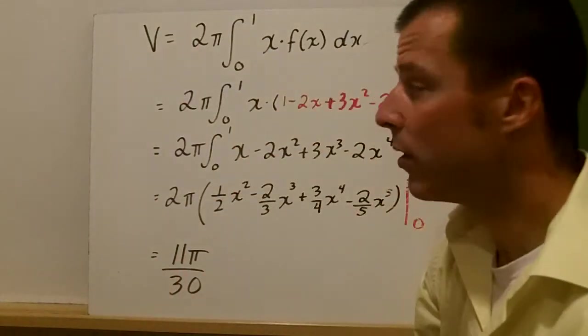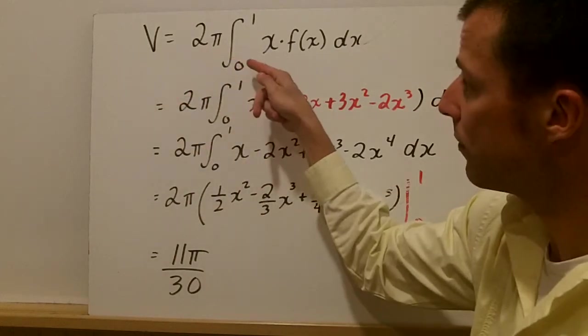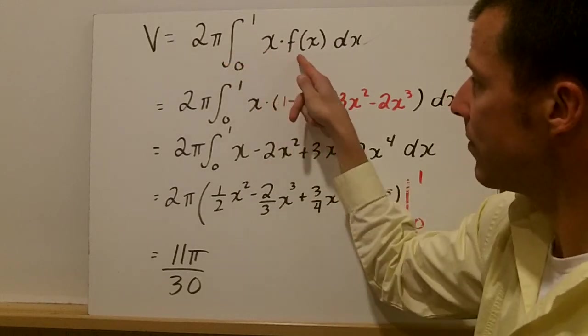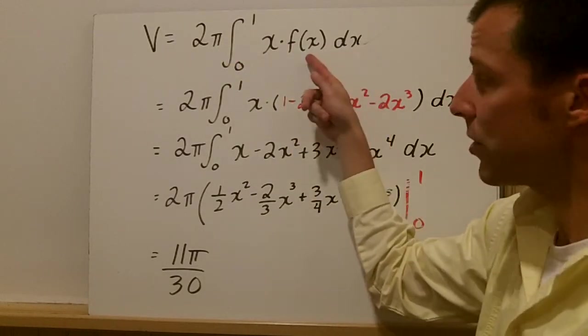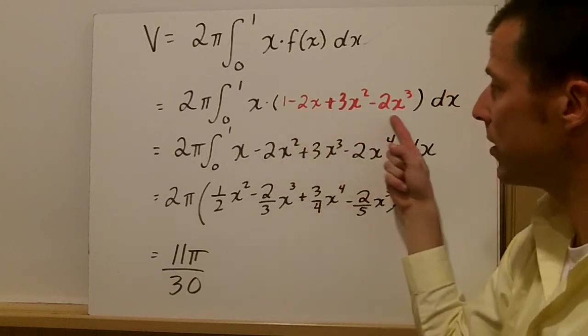Now we only have one function, f(x), so the volume is equal to 2π. Our interval is from 0 to 1 and we're going to multiply x times f(x) dx. Instead of writing f(x), let's substitute what we know and we have that here. It's the only step we did.